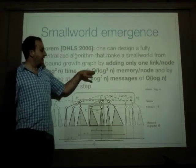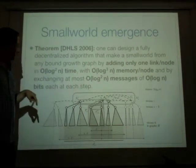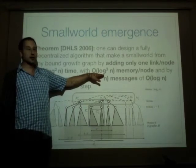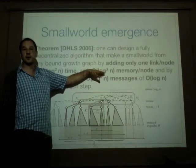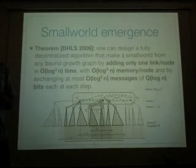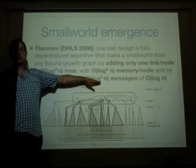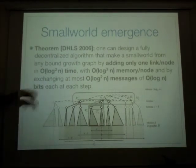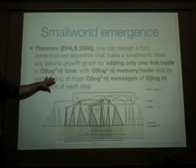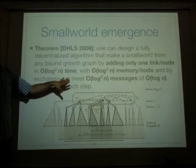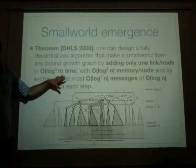We end up adding one friend to everybody. It turns out we can do it in very short time — log squared n only — with very small memory per node: log cubed n. That means everybody will know only log squared persons. It's very realistic in comparison to the agenda of everyone and the number of friends that everyone has and the size of the world — and by exchanging only a few messages each time, you just exchange some friends with people around you, and then you get a small world.